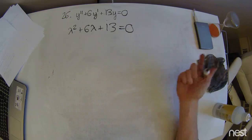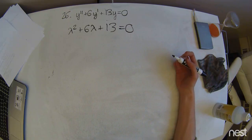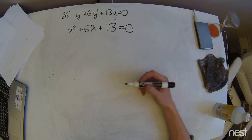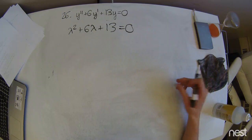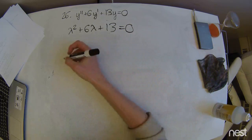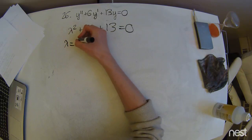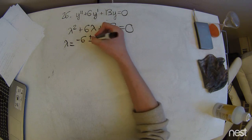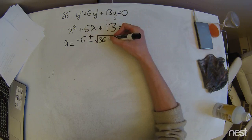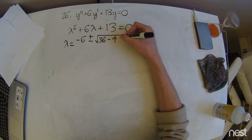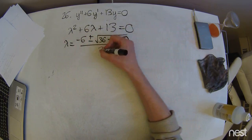We're going to find the roots of this expression, and we're just going to end up using the quadratic formula since there's not an easy factorable thing going on here. So when we set that up, we're going to get lambda equals negative 6 plus or minus square root of 36 minus 4 times 13, all over 2.